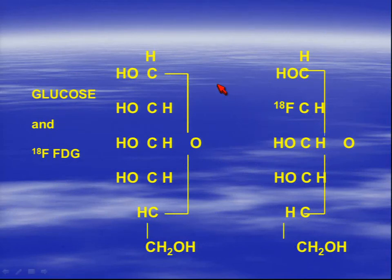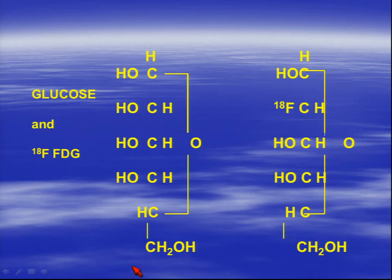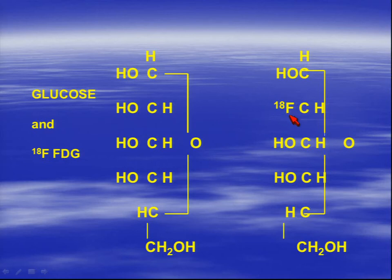The most common thing used in PET scanning is sugar — a glucose compound. Here's the structure of glucose. The way we make the radiopharmaceutical is we take this hydroxyl group and substitute an isotope — fluorine-18. So now we have a glucose compound with an isotope attached to it, and we're able to look at sugar metabolism throughout the body.